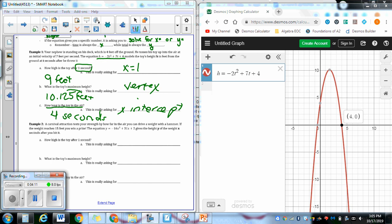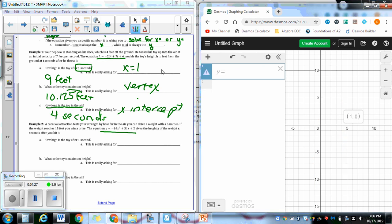For the next one, it says, a carnival attraction tests your strength by how far in the air you can drive a weight with a hammer. If the weight reaches 15 feet, you win a prize. This is an equation here. So I'm going to give this guy into Desmos, y equals negative 16x squared plus 31x plus 2.